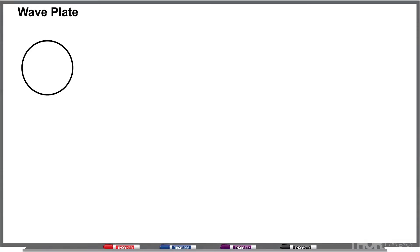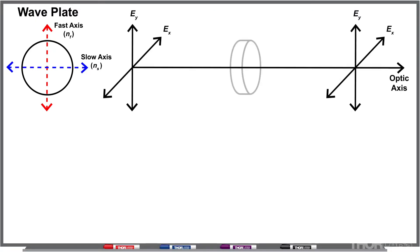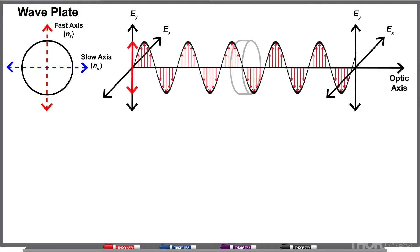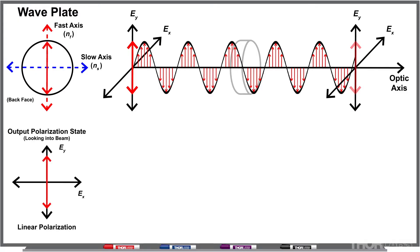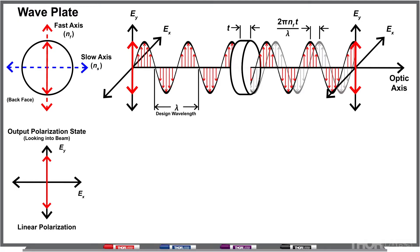A wave plate is special in that it has a different refractive index parallel to the fast axis than it does parallel to the slow axis. If you have linearly polarized light traveling along the optic axis, this can be represented by a wave where the amplitude corresponds to the electric field traveling back and forth through the optic axis. If the light is parallel to your fast axis, you'll still get that same linearly polarized light output from the wave plate. However, the wave will be delayed by an amount proportional to the refractive index parallel to the fast axis and the thickness of the wave plate.